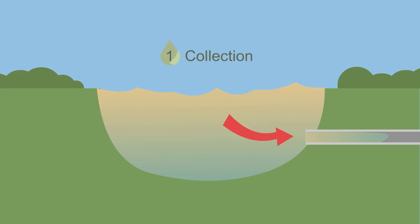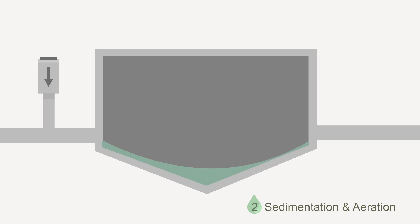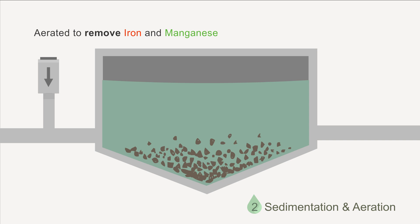Once raw water is collected from the rivers or from naturally filtered wells next to them, the water is either pumped to large enclosed basins where debris and other impurities settle out, or aerated to remove iron and manganese by circulating air through the water.